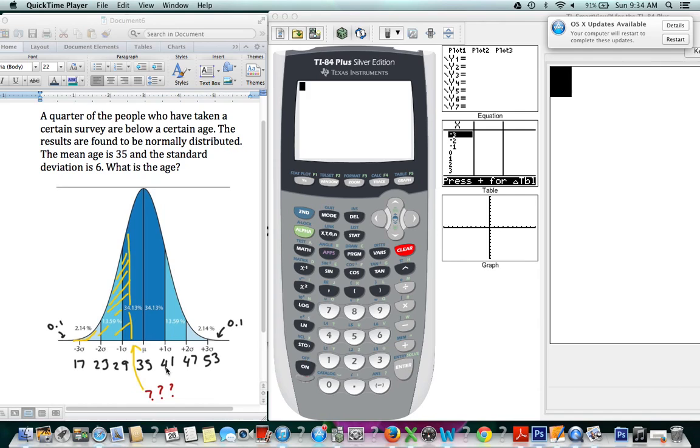And we counted up by 6 and then we counted back by 6, so we got all these numbers on our x-axis. We were good to go and we wanted to see what x-value we could have here.